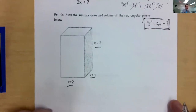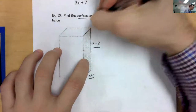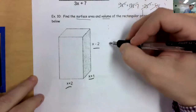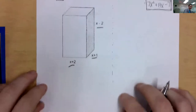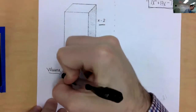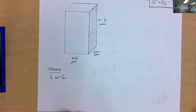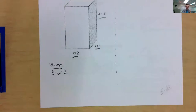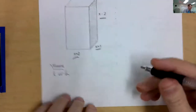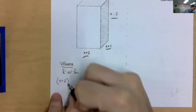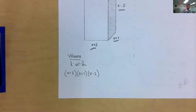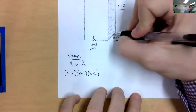Last question — it's a big one. I'm asking you to do two different things: find the surface area and find the volume. Believe it or not, volume is going to be easier. I would split up your paper — you need a lot of room for surface area, not as much for volume. Volume is length times width times height. Like if this was 2 times 4 times 5, I'd do 2 times 4 to get 8, then 8 times 5 is 40. Let the length be (x + 2), the width be (x + 1), and the height be (x − 2).